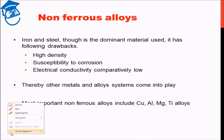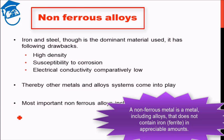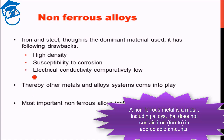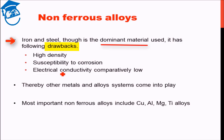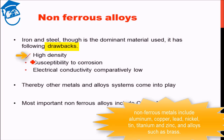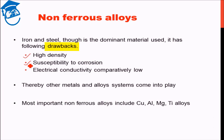As we saw, ferrous alloys offer a wide variety of solutions for different applications, but then why do we need non-ferrous alloys? Iron and steel, though the dominant materials used, have the following drawbacks: iron has inherently a high density, which makes materials heavy. It is also highly susceptible to corrosion — the corrosion behavior of iron is not very good — and that leads to loss of material and catastrophic failure.